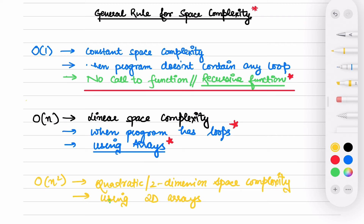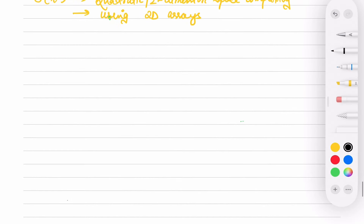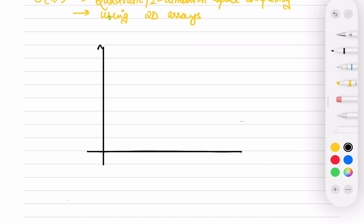So this is the general rule — I am not saying it's a thumb rule. But in case you are not getting any start or any solution to calculate space complexity, you can look at these parameters. One more thing: if you want to visualize all this in a graph — we'll be talking about efficiency classes in detail later — but I want to consolidate space complexity here before we start with time complexity.